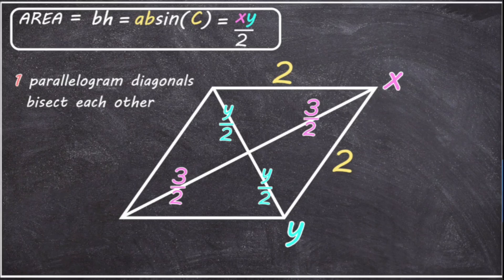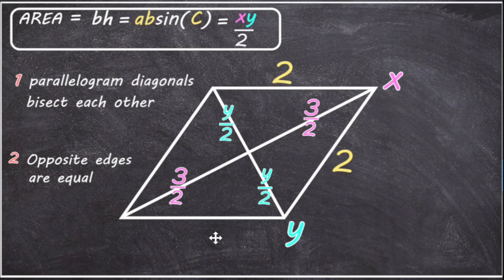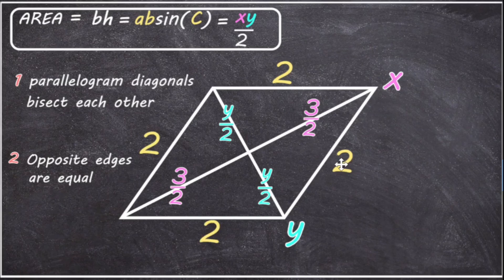The second property is that opposite edges are equal. So because the length of the top edge is two, the length of the bottom edge must be two, and because the length of the right edge is two, the length of the left edge must be two. Now since all four edges of this parallelogram are of equal length, this must be a rhombus.